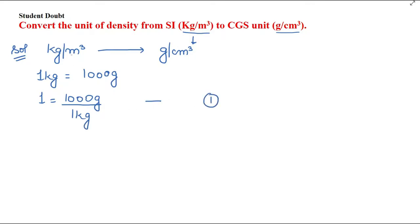Now the second step: we will convert meter cube to centimeter cube. First we convert meter to centimeter — 1 meter equals 100 centimeters. Here the meter is in the denominator, so we will take 100 centimeters to the other side in the denominator.